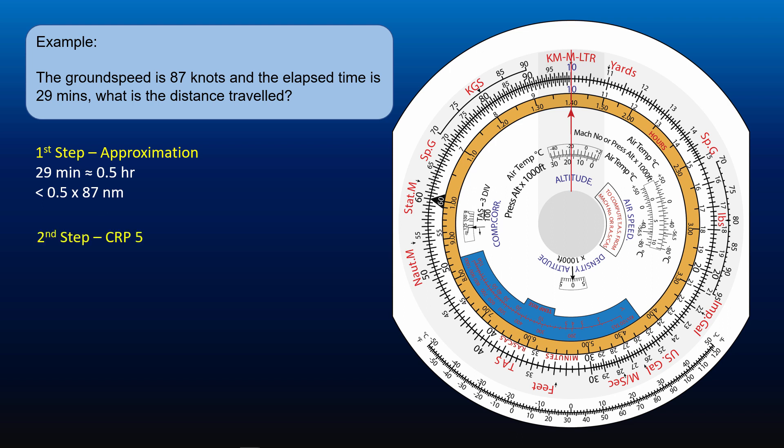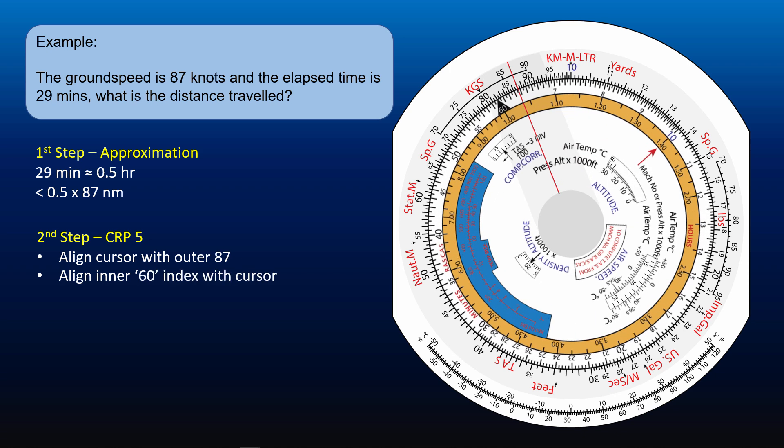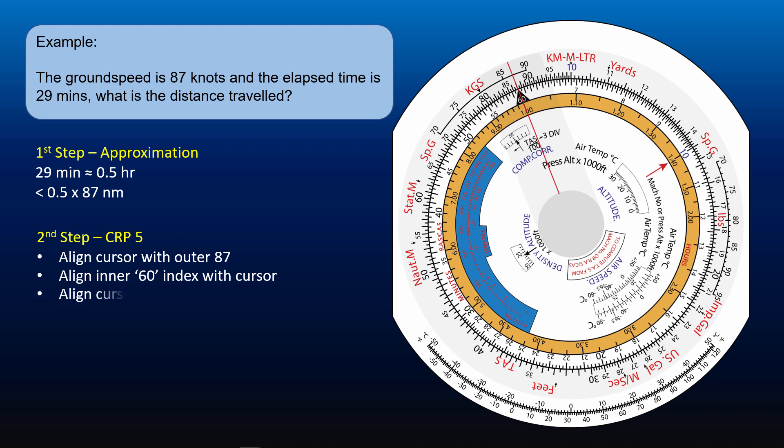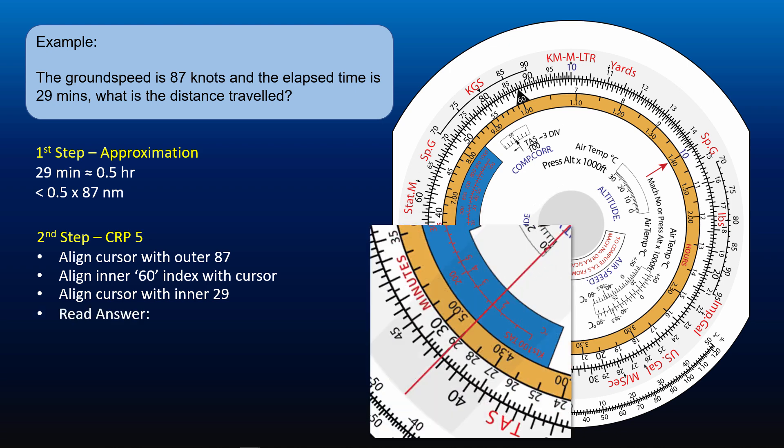Next, we will use CRP5 to get the answer. First, align the cursor with 87 on the outer scale. Next, align the 60 index on the inner scale with the cursor. Next, align the cursor with 29 on the inner scale. Read the distance traveled on the outer scale opposite to 29 on the inner scale. 42.1 nautical miles.